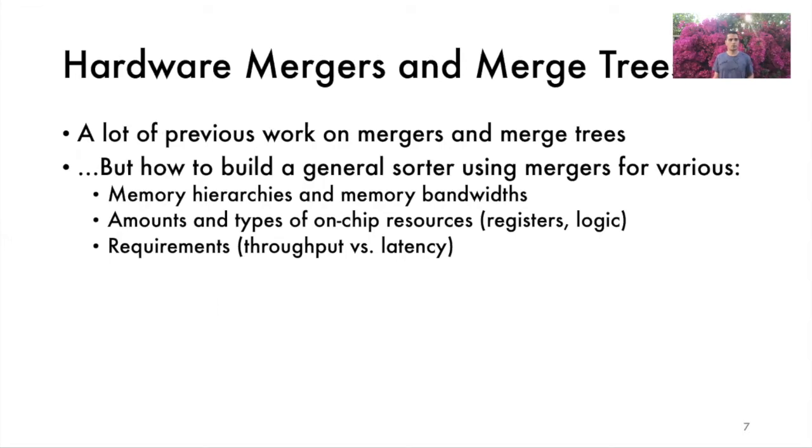Bonsai implements merge sort using hardware mergers and merge trees. There has been plenty of work on making these merging primitives fast. However, there is no single merge tree that works well on all hardware, and previous work did not build a complete sorter that can optimally adapt to different hardware constraints. For example, it is unclear when we should keep data on the FPGA and when we should store it back on DRAM or maybe even to SSD storage. How much better can merge tree performance get if we double DRAM bandwidth? What about if we double DRAM capacity? Our work comprehensively explores these types of questions and implements a full sorting solution that can adapt to each of these scenarios.